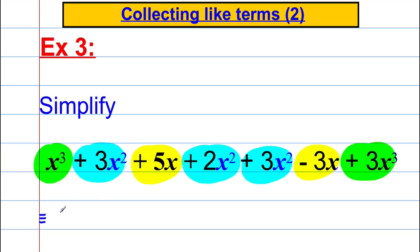1x cubed add 3x cubed is 4x cubed. 3x squared add 2x squared is 5x squared, and another 3x squared is equal to 8x squared. And 5x take away 3x is equal to 2x. Simple as that.